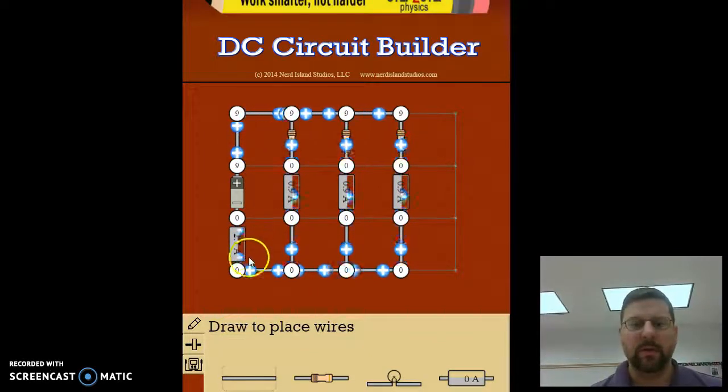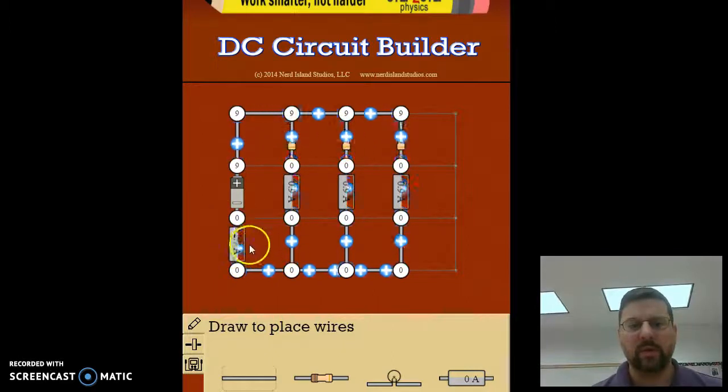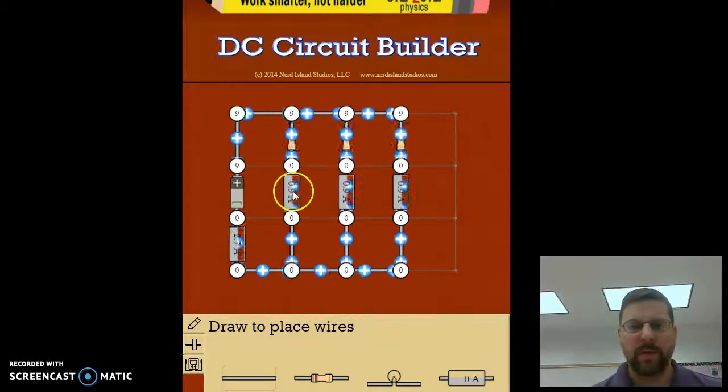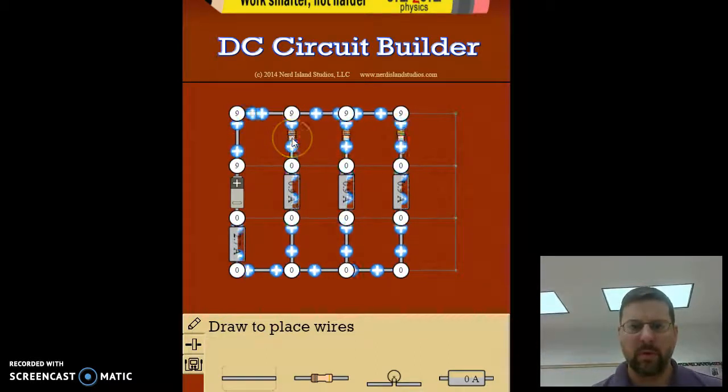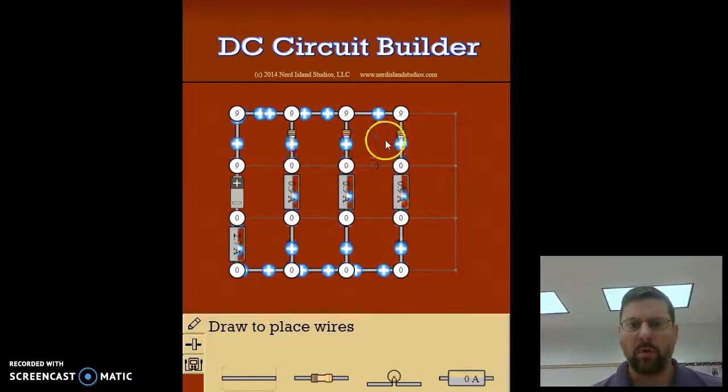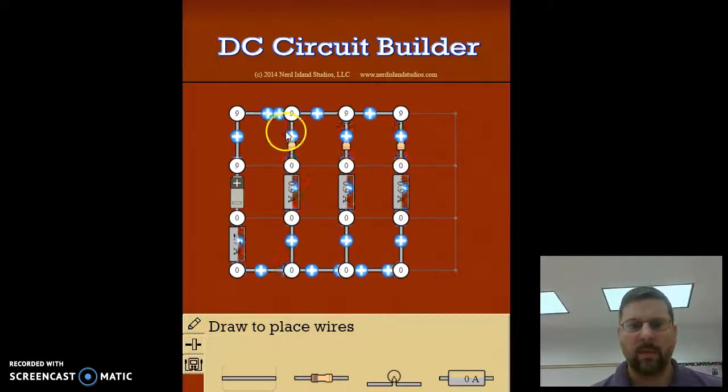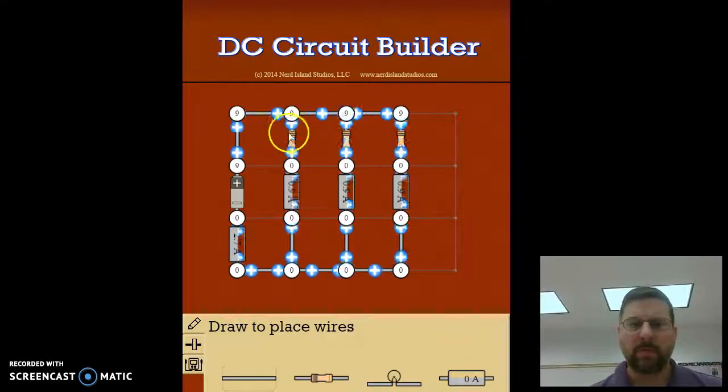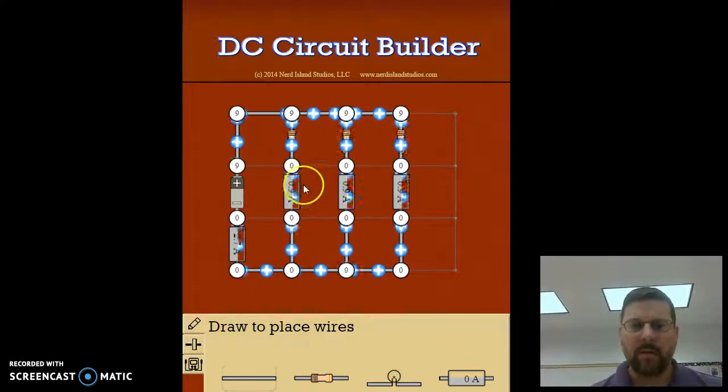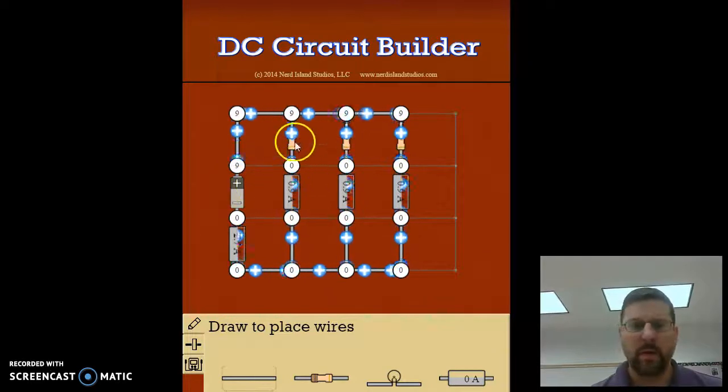And so what that's going to lead us to conclude is that the currents, if you look at the currents, the total current down here is 2.7 amps on my example. And then each of the branches, because the resistors are all equal, and I think they're the default 10 ohm resistors.